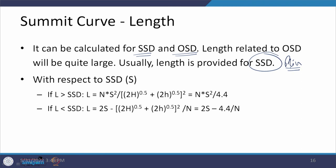Using the geometric diagram, we can find the length equations. Case 1: when L is greater than SSD, the formula is L = NS²/(2√(2h₁) + 2√(2h₂))², which with h₁ = 1.2 m and h₂ = 0.15 m reduces to L = NS²/4.4. Case 2: when L is less than SSD, the formula is L = 2S − 4.4/N. Two values are needed: N (difference in gradients) and S (the SSD value).